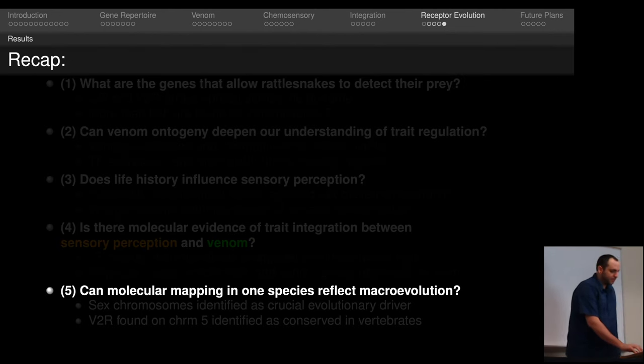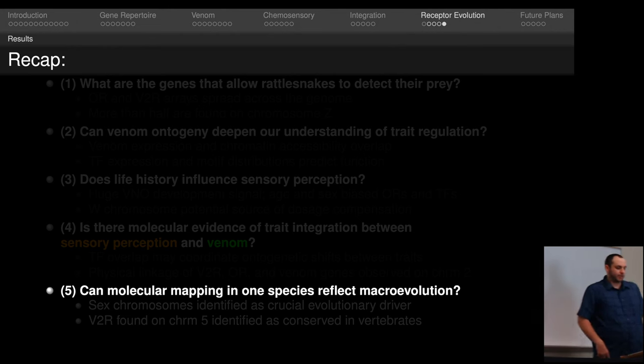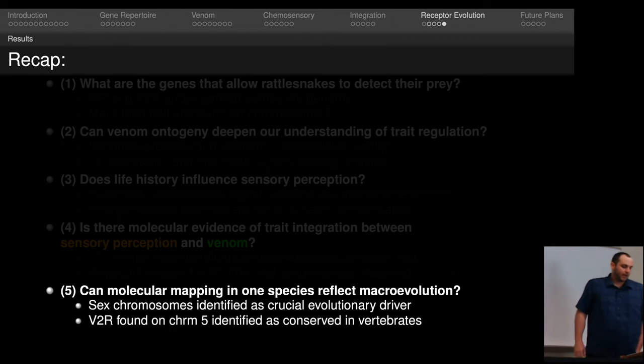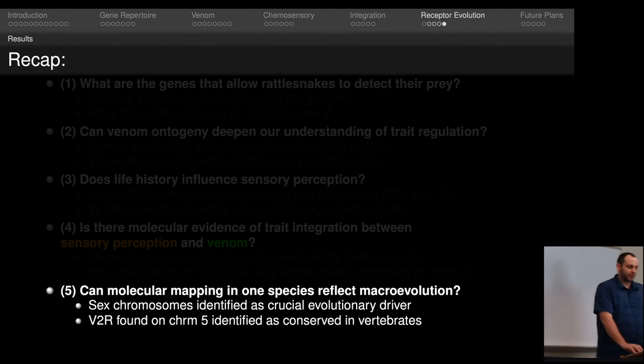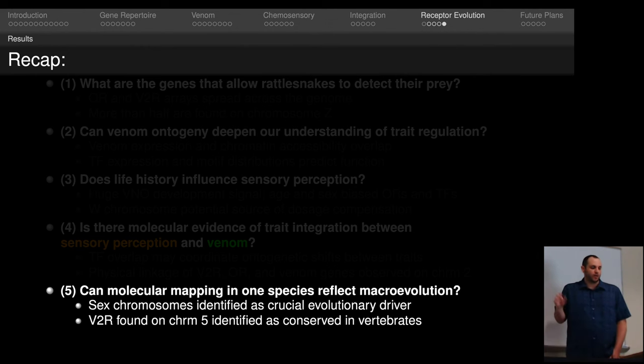To summarize this section, can the molecular mappings in one species reflect macroevolution? I found that the sex chromosomes are a crucial evolutionary driver for snake chemoperception. We should look at the evolution of the chromosomes to get a better holistic idea of how these traits have evolved. I also found one V2R that was really highly expressed, and I was able to trace it all the way back across vertebrates and look at its evolution in deep time.